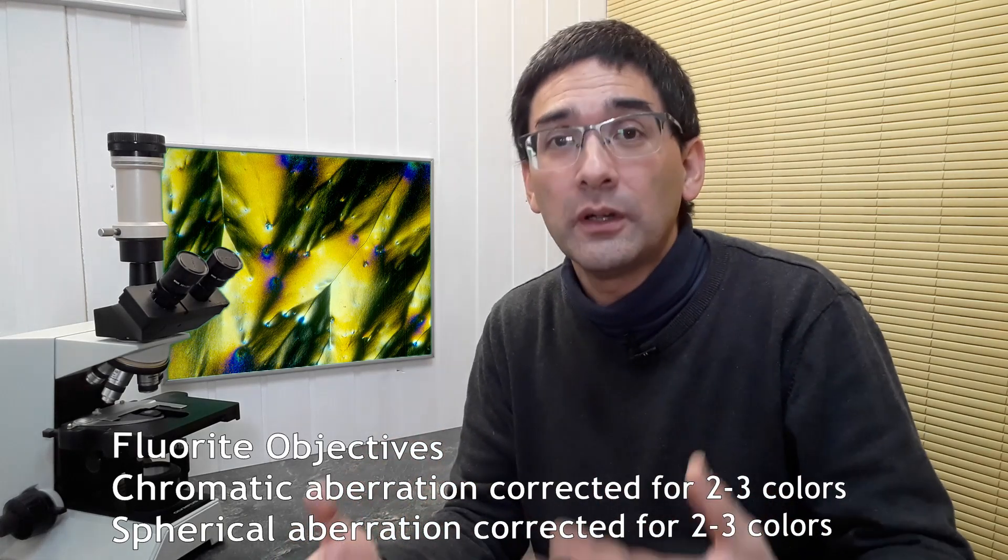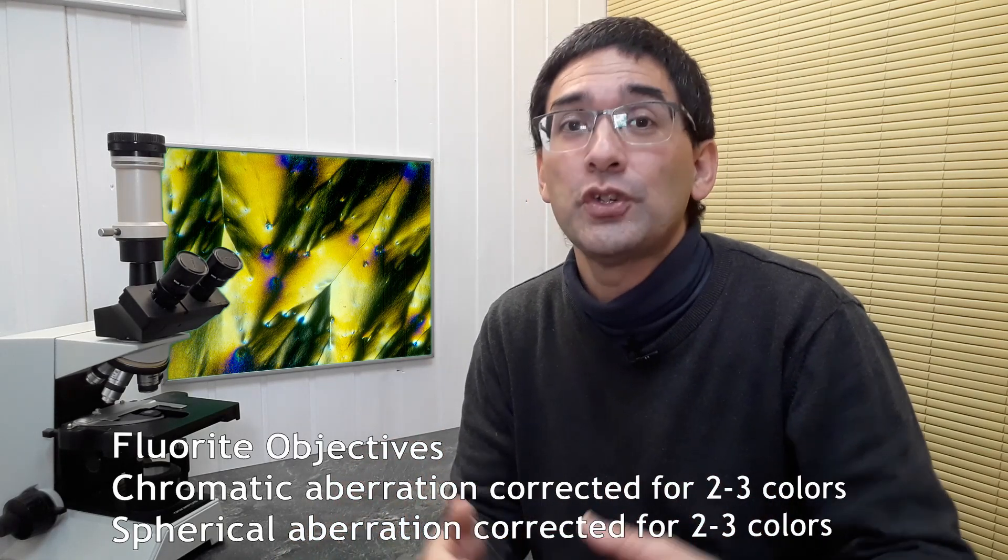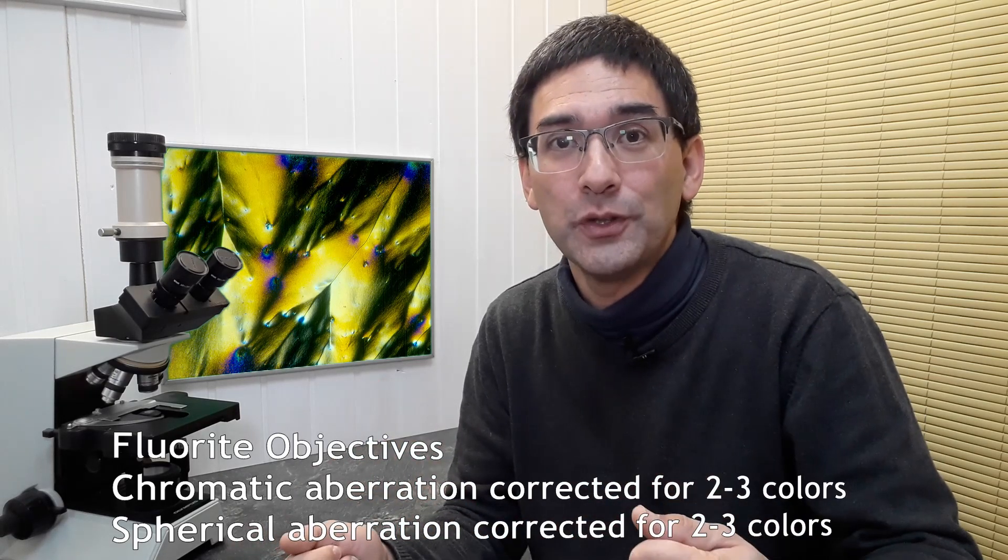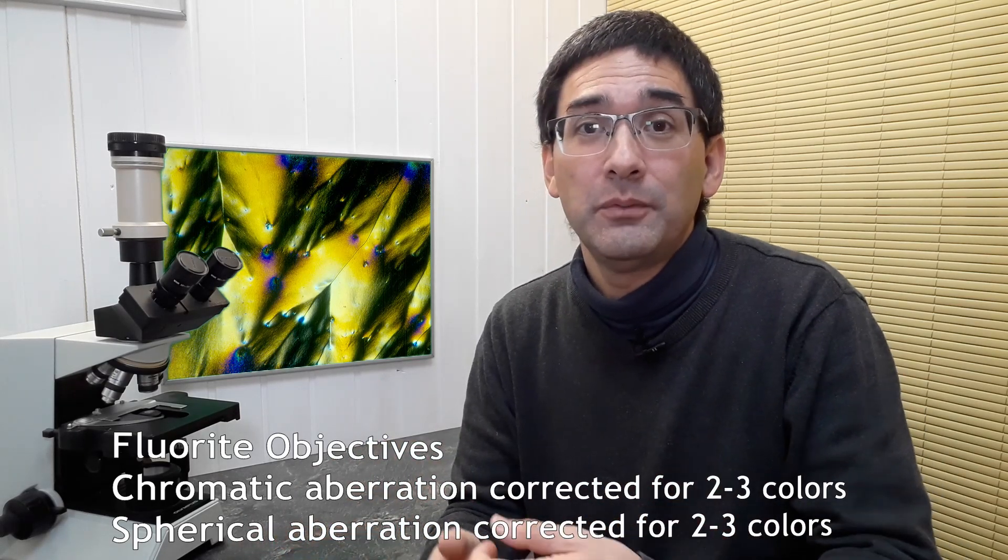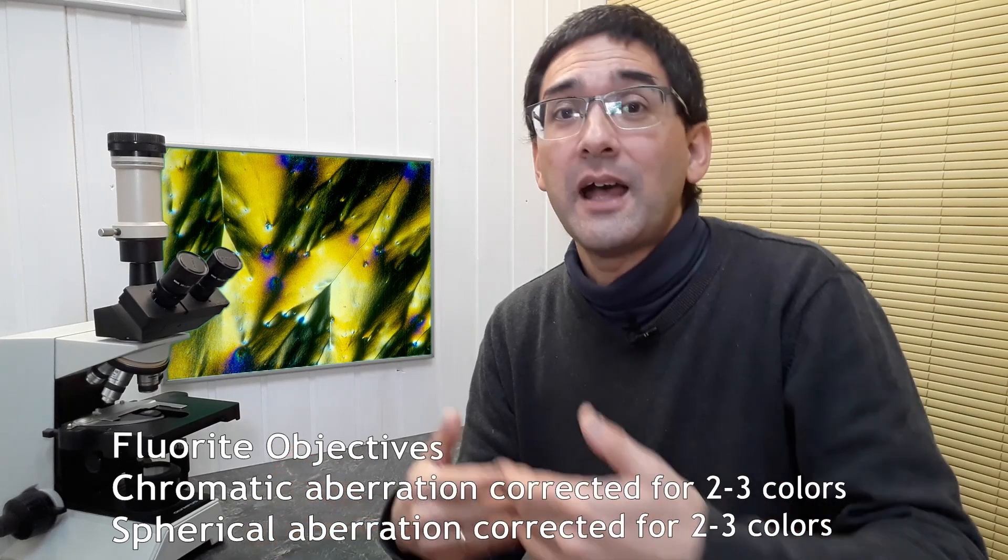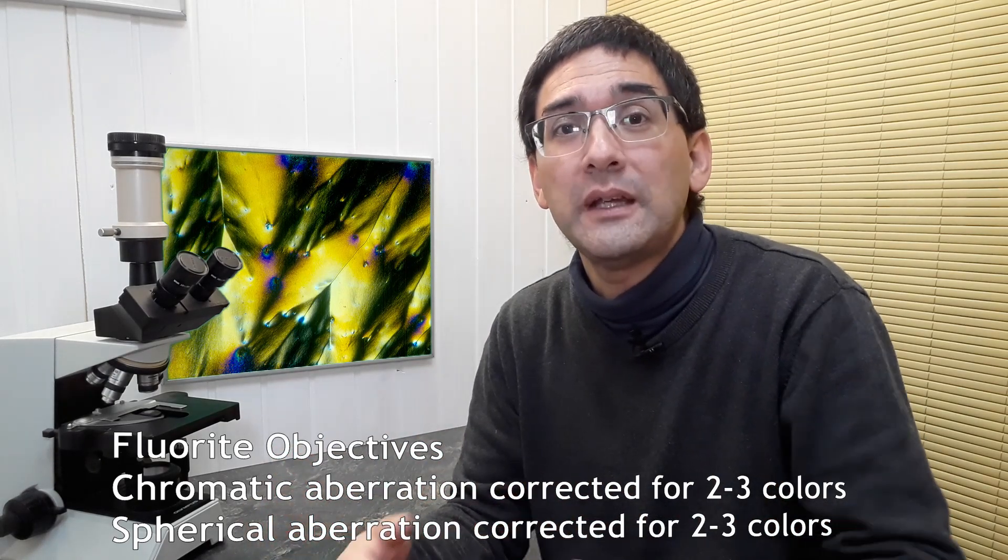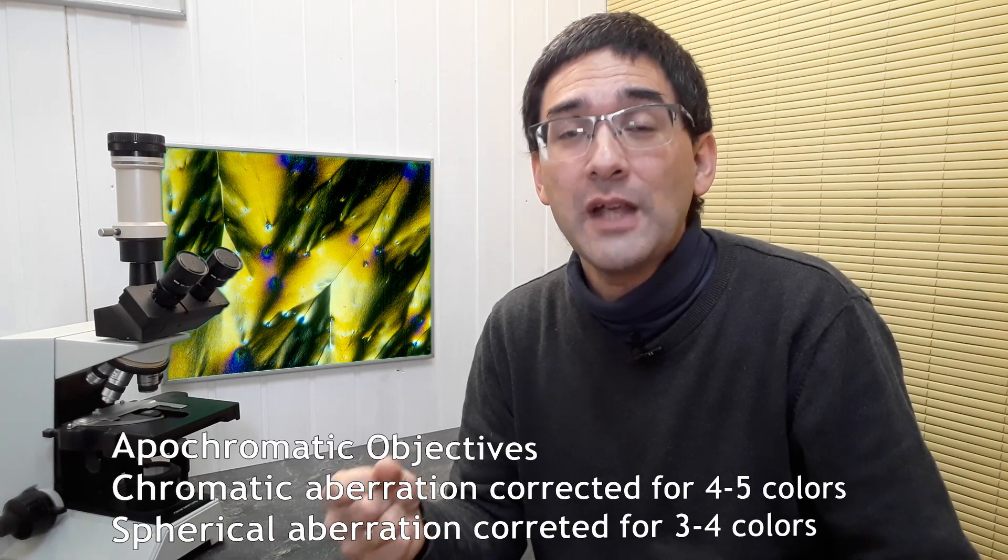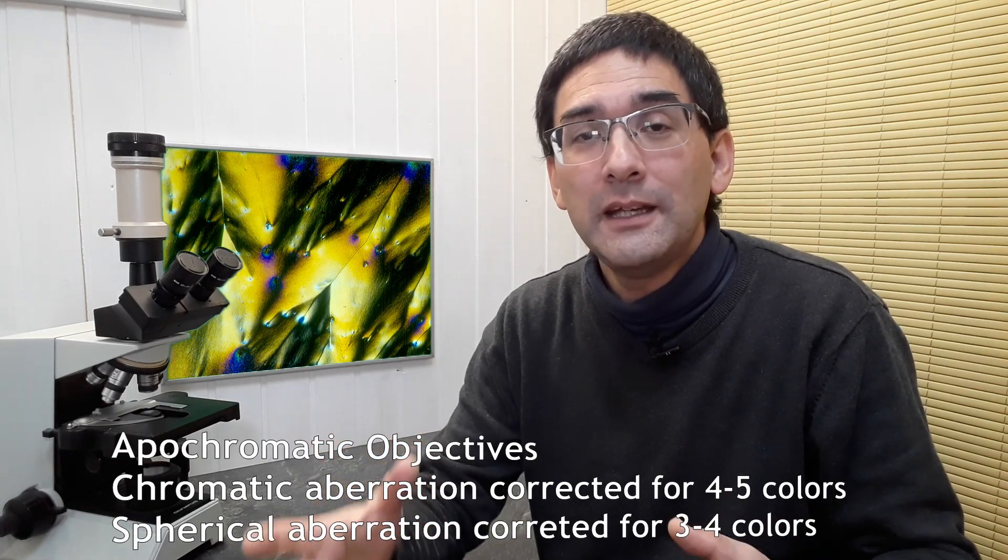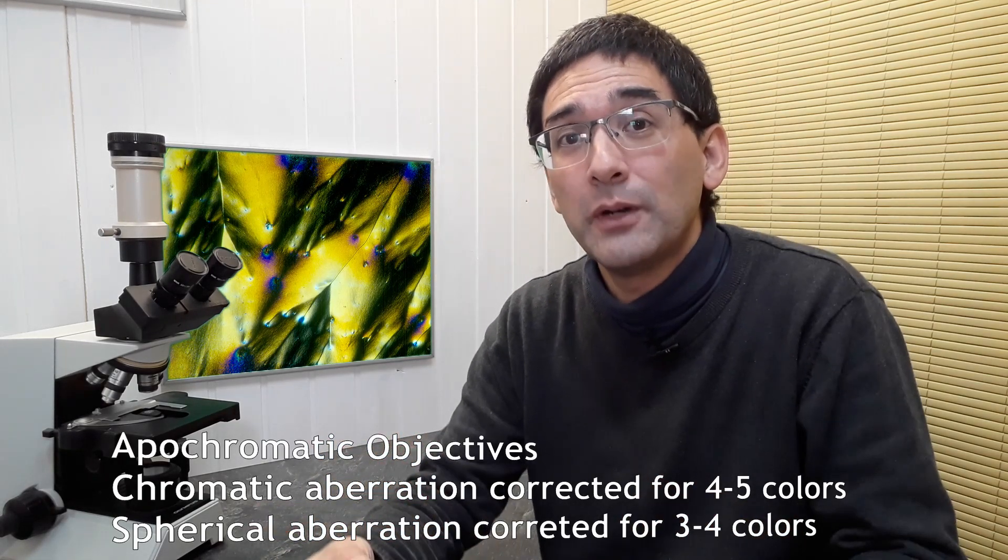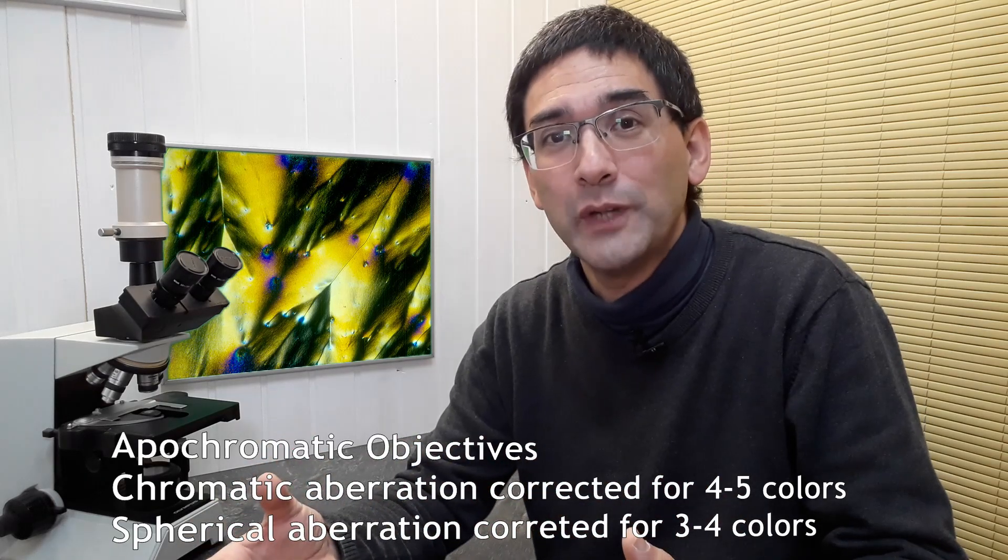These fluoride objectives correct more colors for chromatic aberration and also more for spherical aberration. And then the next higher degree of correction are so-called apochromatic objectives. And those apochromatic objectives again provide a crisper image because yet more colors are corrected for chromatic and for spherical aberration.